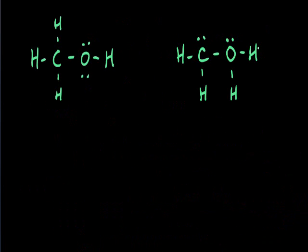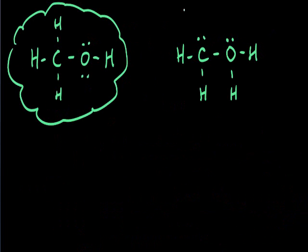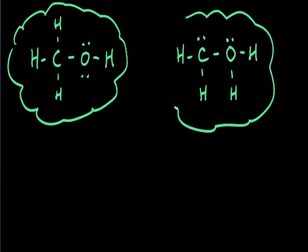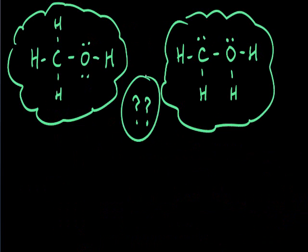Here we have an example where two different people, given the same formula, arrive at two completely different Lewis structures. This is where we would use formal charge to try to determine which of these Lewis structures is more likely to be the actual structure.